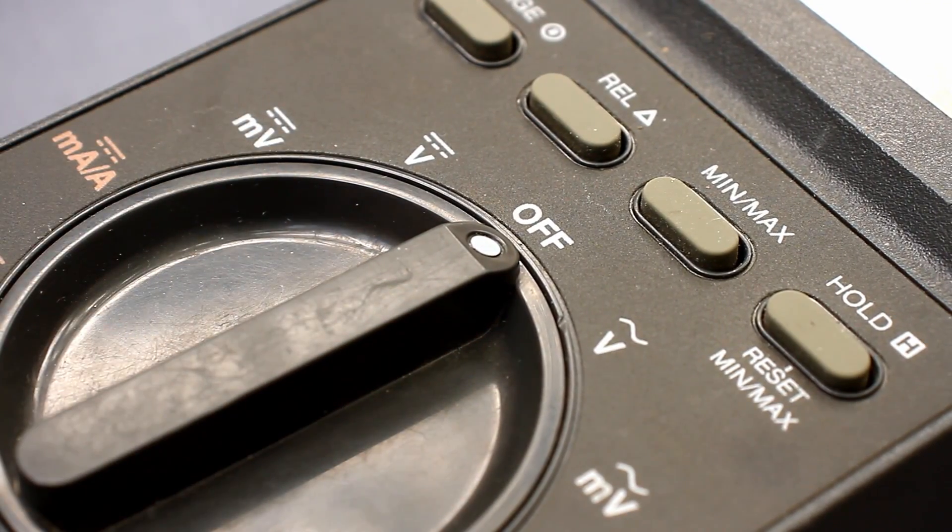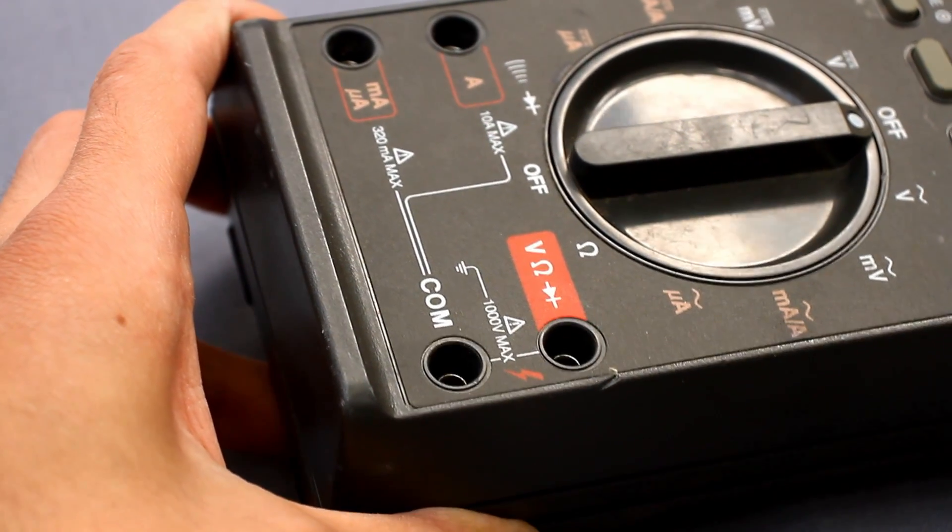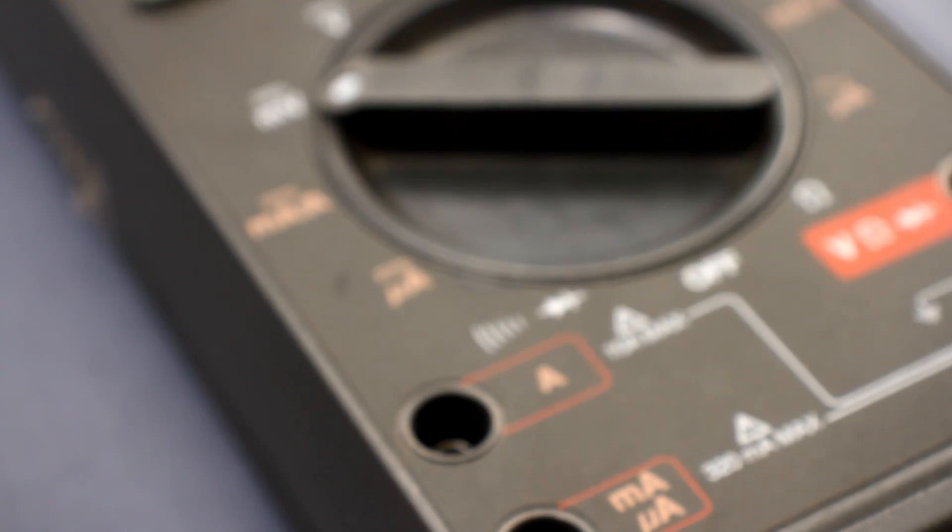In the center is the mode switch, below are the input terminals, the main measuring, ground and a pair of terminals for measuring low current up to 320mA and up to 10A.